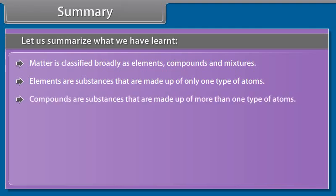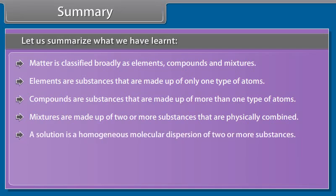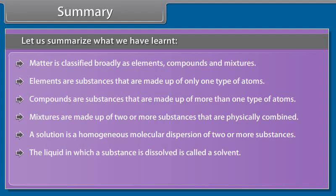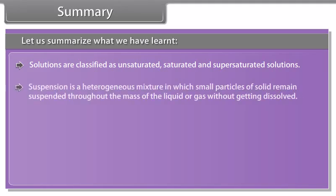Activity: Take a mixture of sand and iodine in a china dish and cover it with an inverted funnel. Heat the mixture gently with a burner. Violet fumes of iodine vapor rise through the funnel and condense to a solid on the cooler surface of the funnel stem. Stop heating when no more vapor comes out. The pure iodine crystals are scraped out, while the non-sublimable sand remains in the dish. Iodine is a common example of a substance that visibly sublimates at room temperature slowly.